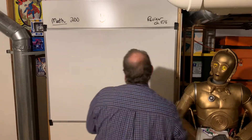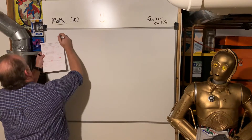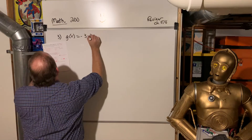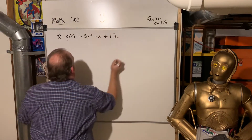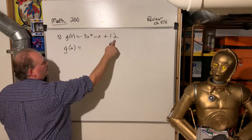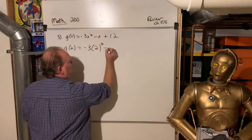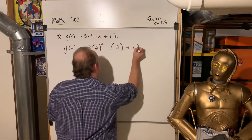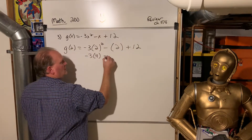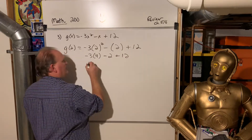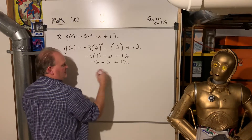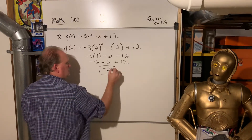Number 3: g of x equals negative 3x squared minus x plus 12. Find g of 2 — put 2 everywhere you see x and follow order of operations. So negative 3 times 4 minus 2 plus 12 equals negative 12 minus 2 plus 12. The negative 12 and positive 12 cancel, leaving just negative 2.